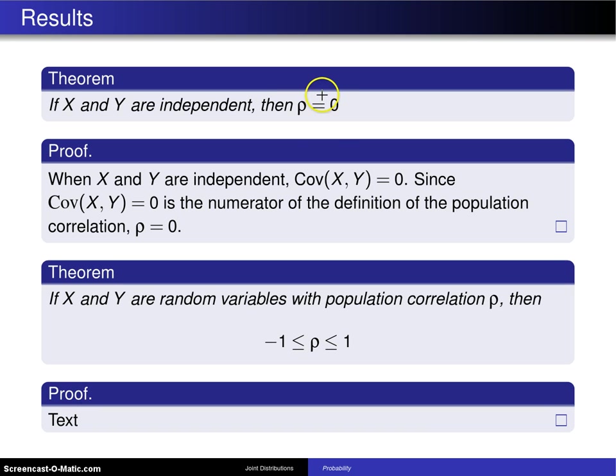So three interesting cases are going to be, of course, rho equals zero. If you have independent random variables, then you'll have a correlation of zero. The other interesting cases are rho equals negative one and rho equals positive one, and those are taken up on the next slide.